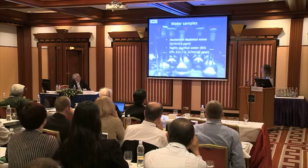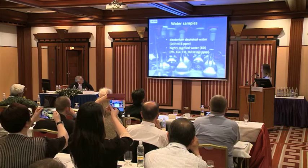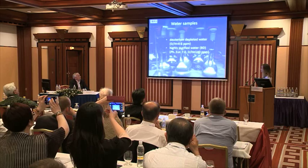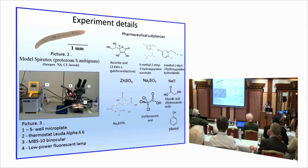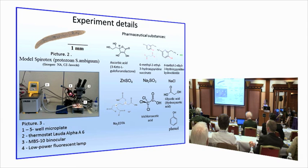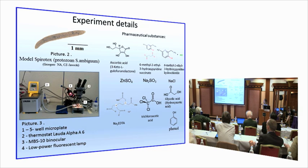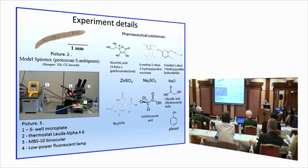All investigated solutions were prepared using deuterium-depleted water with a deuterium-protium ratio of 6 ppm, and highly purified water with a deuterium-protium ratio of 140 ppm. For the bioassay, we used the Spirotox model with Spirostomum ambiguum and solutions of test substances including ascorbic acid, glycolic acid, trichloroacetic acid, pyridine derivatives, and others.